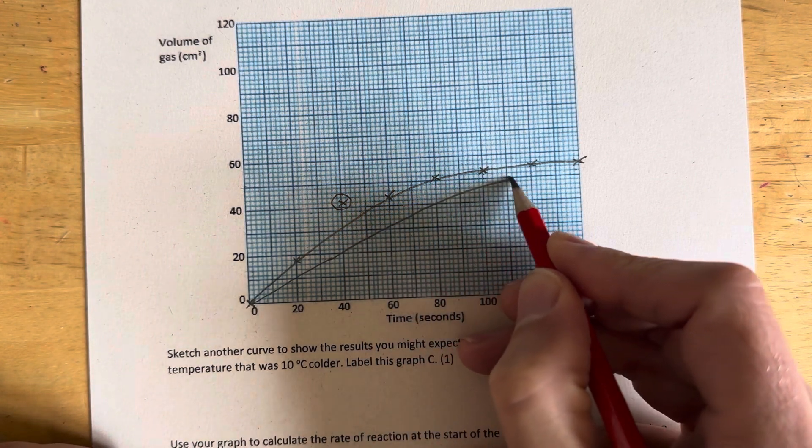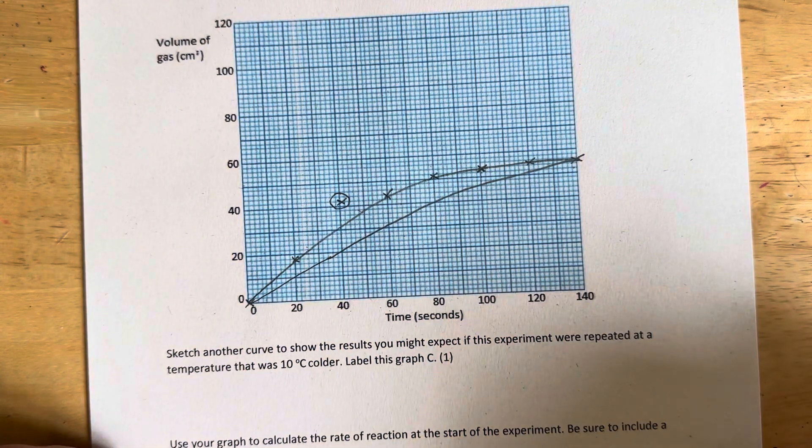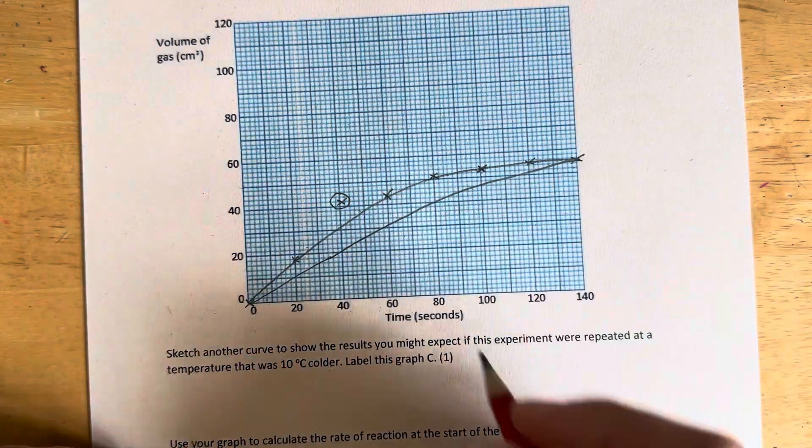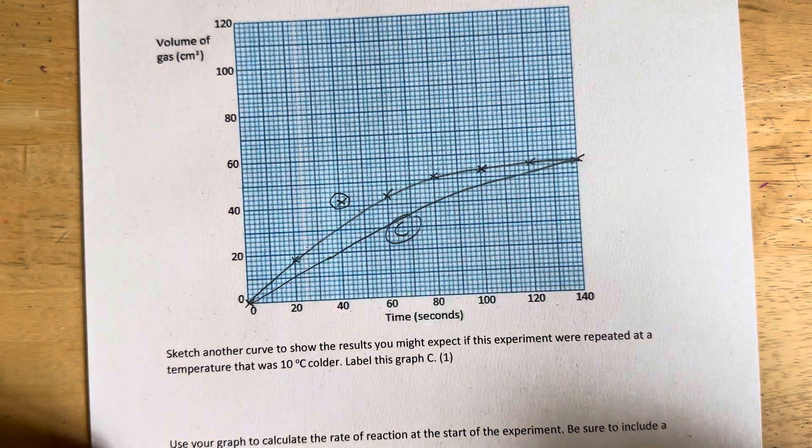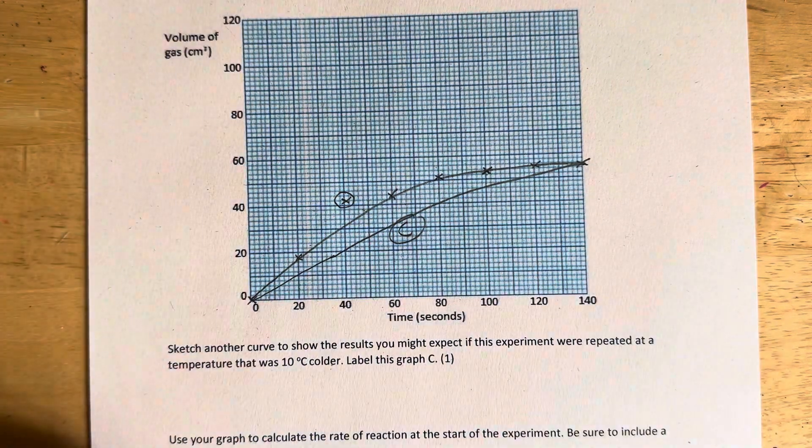So slower and finishing roughly at the same place. We can label that curve C. All these questions and more on ailshamhighchemistry.com.